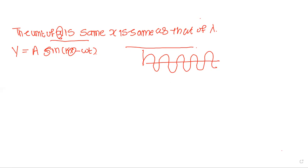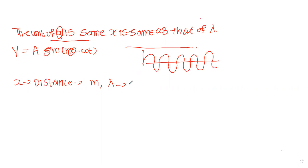So will this statement be correct? Yes, it is correct — because x represents distance in the SI system measured in meters, and lambda is also a measurement of distance between adjacent points, hence it also has units of meters only.